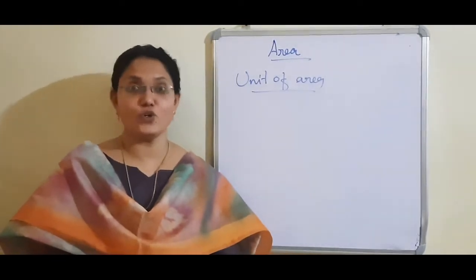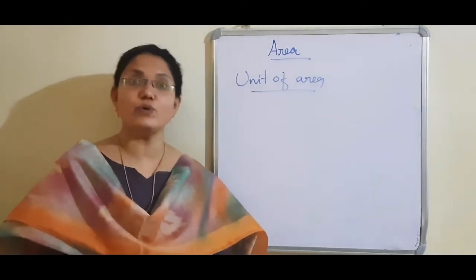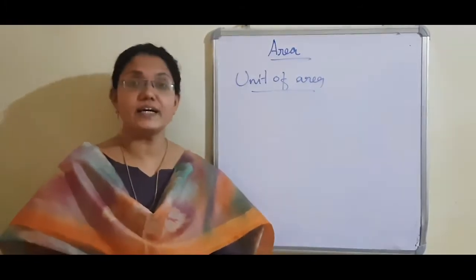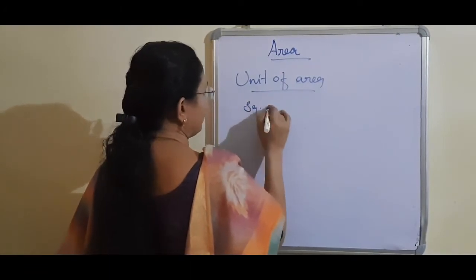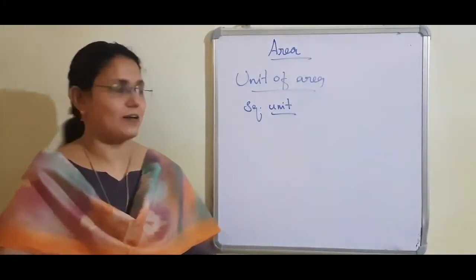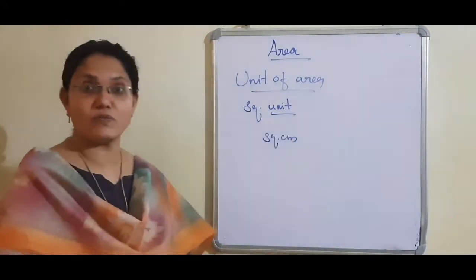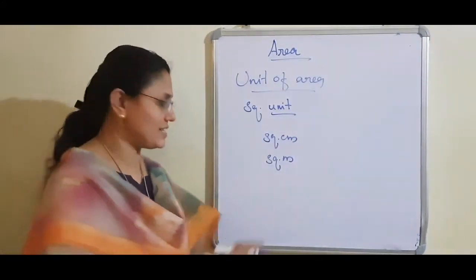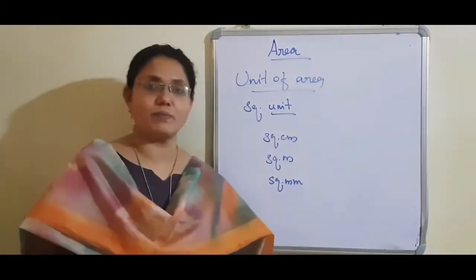When we write the unit of perimeter, the same unit is written for perimeter. But in the case of area, the unit of area is square unit. This unit will change according to the unit given with the measurement. For example, if centimetre is given, we write square centimetre. If metre is given, we write square metre. If millimetre is given, we write square millimetre.